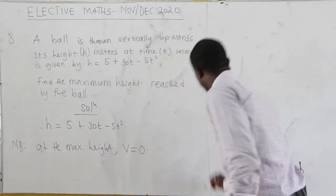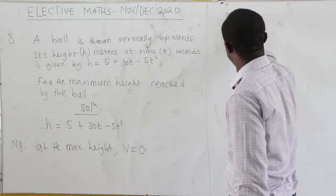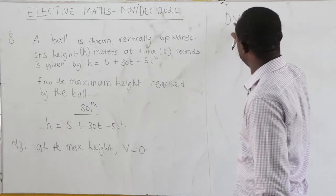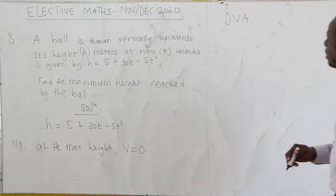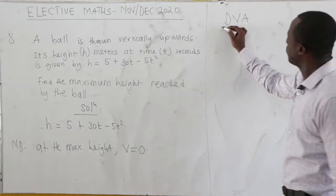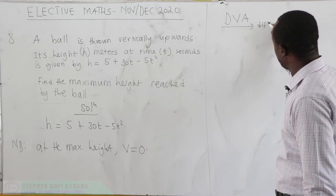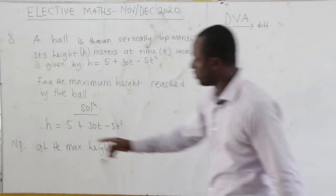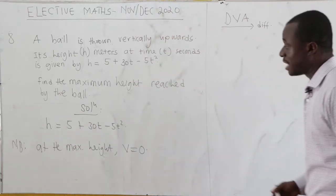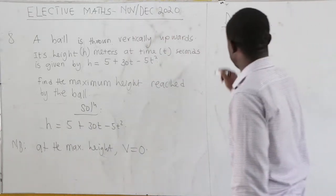We should not forget we have DVA: displacement, velocity, acceleration. If we have displacement and want velocity, what do we do? We differentiate.